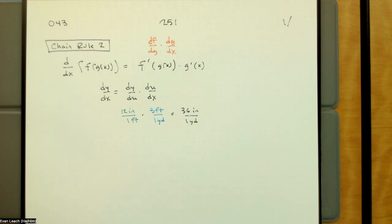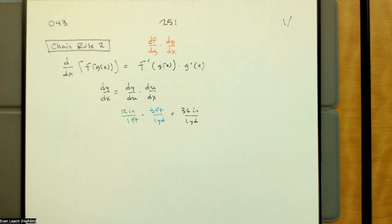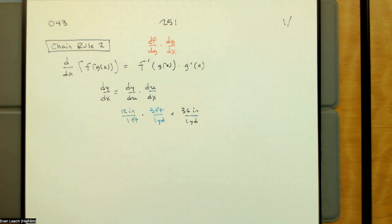Remember the three tricks of mathematics: add zero, multiply by one, do a problem you already know how to do — modify to a problem you already know how to do and then upgrade it. So here the feet are canceling out, just like the du cancels out, or just like the dg cancels out.